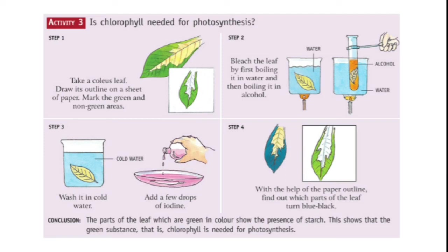Place the leaf in a petri dish and add a few drops of iodine, then observe the color. The part of the leaf that was green shows the presence of starch — it turns blue-black — proving that chlorophyll is needed for photosynthesis. The non-green part does not turn blue-black, confirming that chlorophyll was absent there.